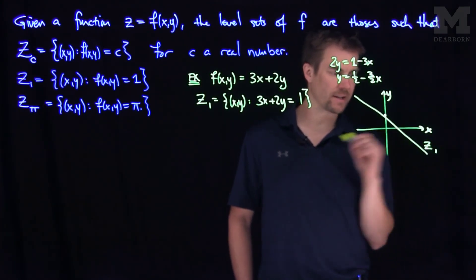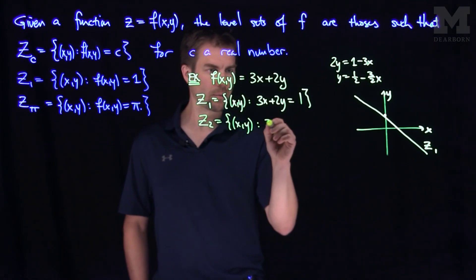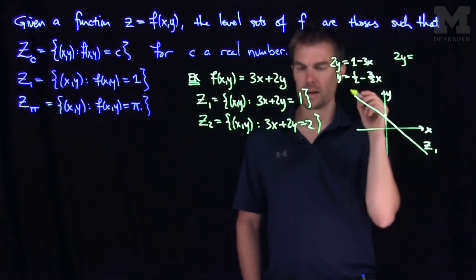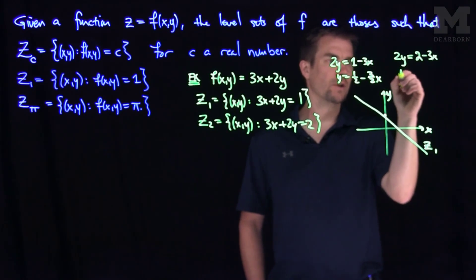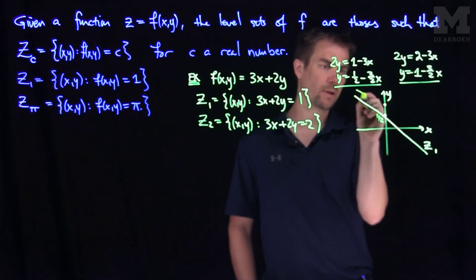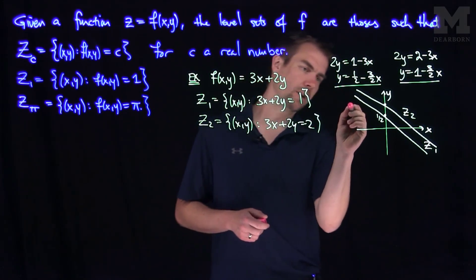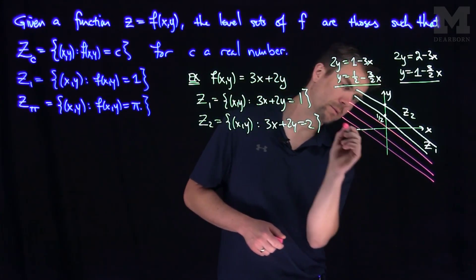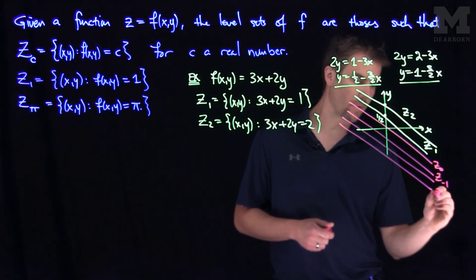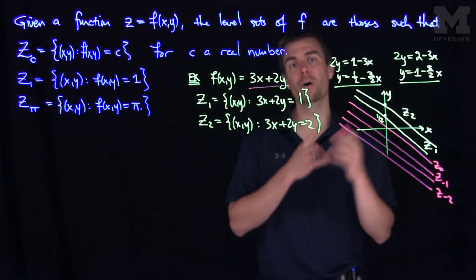If we look at z2, it would be the set of all points x and y such that 3x plus 2y is equal to 2. Solving this gives 2y equals 2 minus 3x, so y equals 1 minus three halves x. This line has the same slope as z1, just a different y-intercept of 1. By working through this example, you'll see that all the level sets of this function are straight lines with slope negative three halves — parallel lines. So z0, z negative 1, z negative 2, etc., are all parallel straight lines with slope negative three halves.